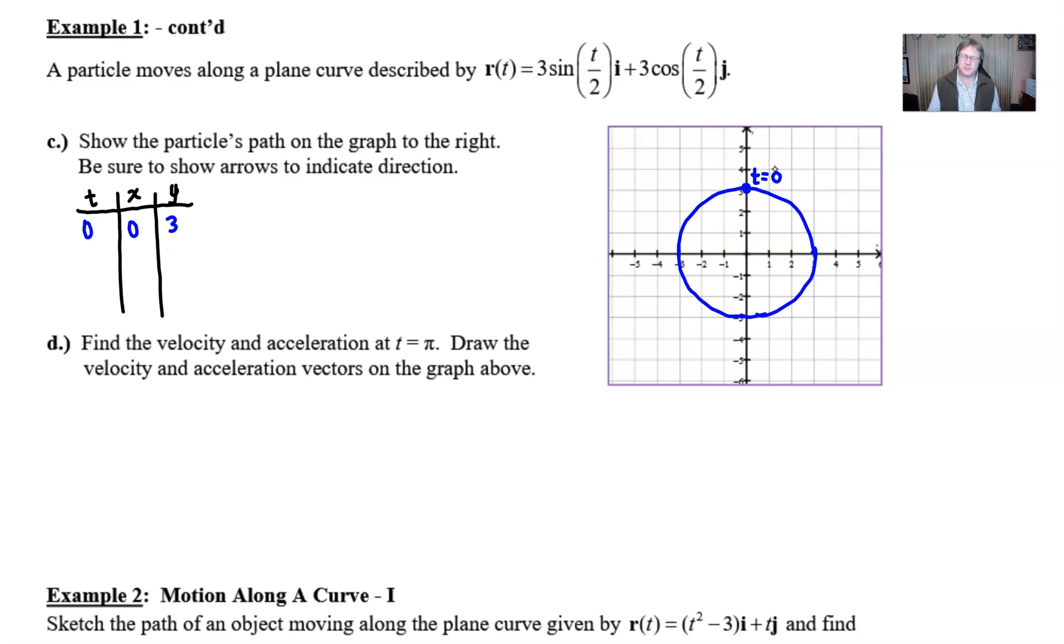That doesn't tell us much yet so we might plug in another value. I got a feeling that π is probably going to be good because we're already dividing by 2 and that could help us. If we have 3 times the sine of π over 2 that is 3 times 1 so that puts us at 3, and 3 times the cosine of π over 2 is 3 times 0. So boom here we are. We know we're moving in this clockwise direction and you only need one arrow to indicate that.